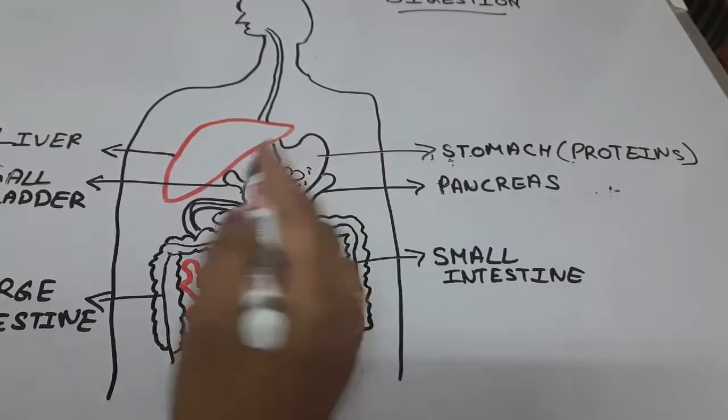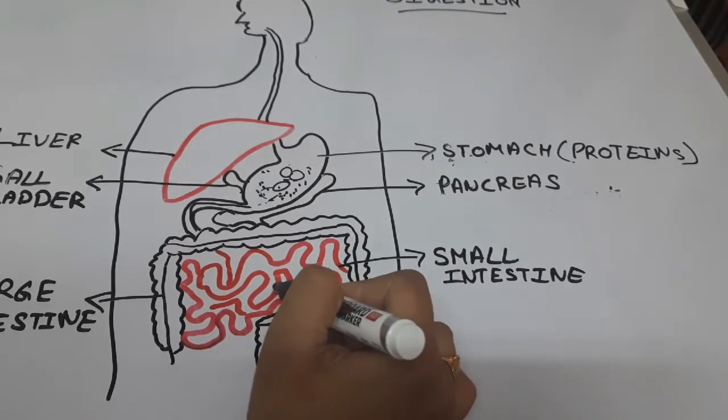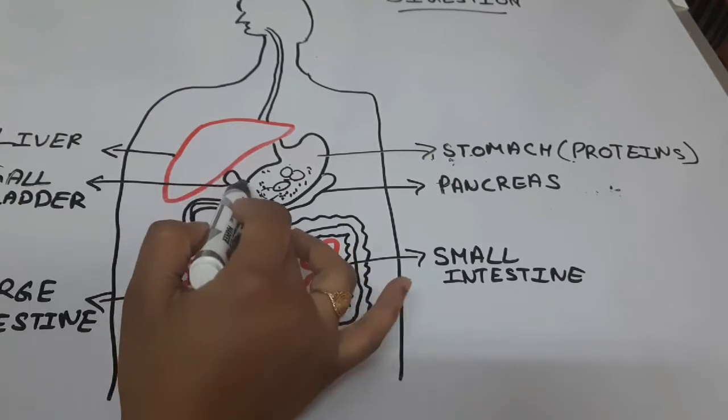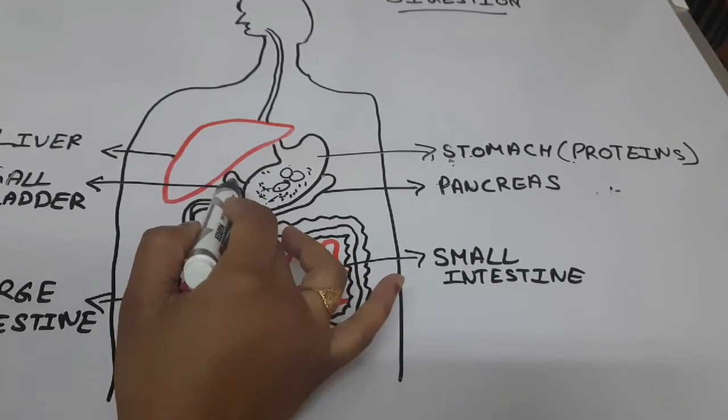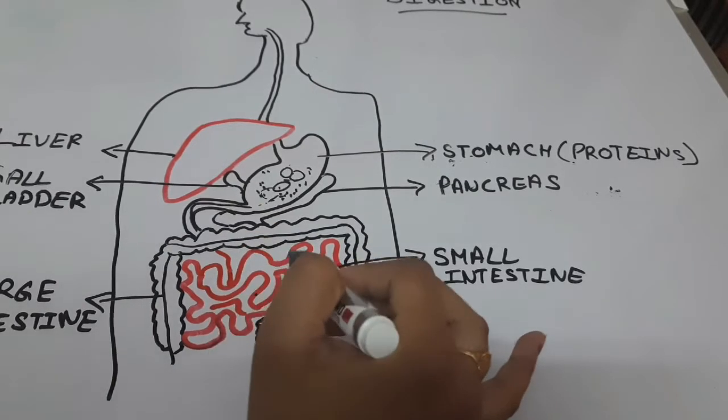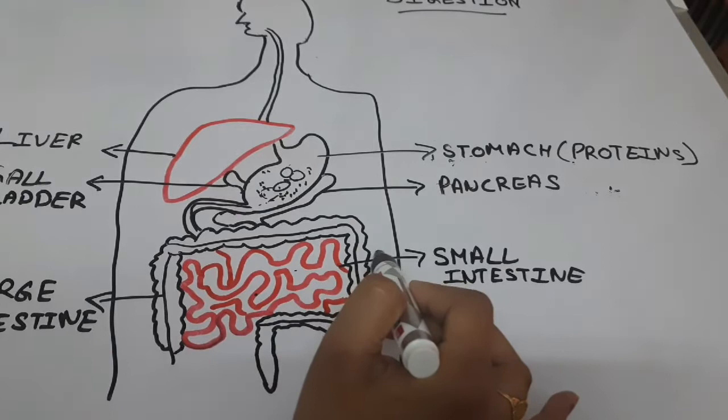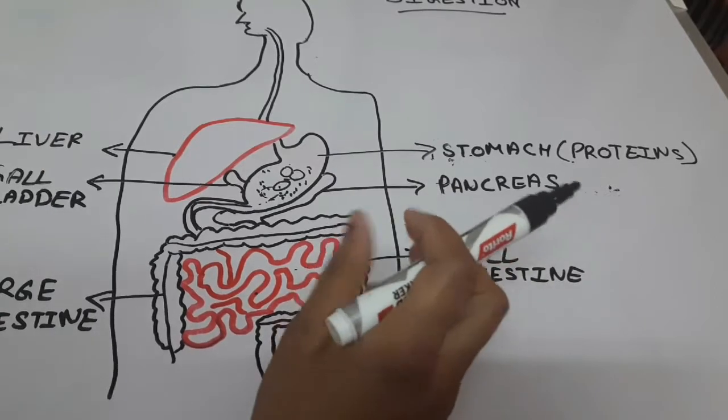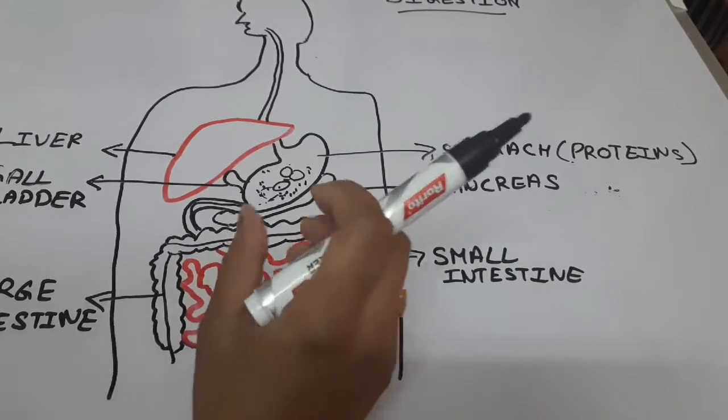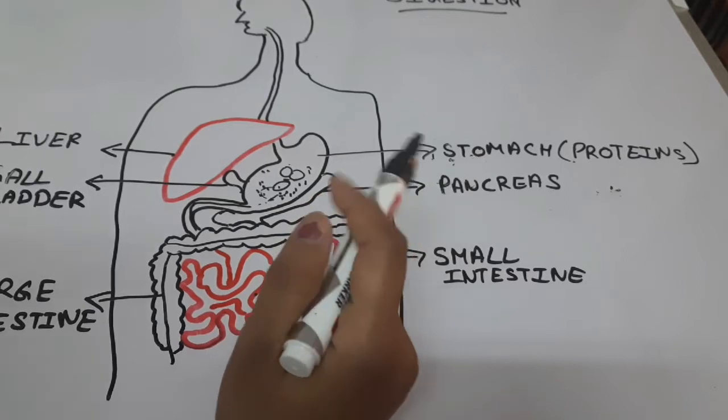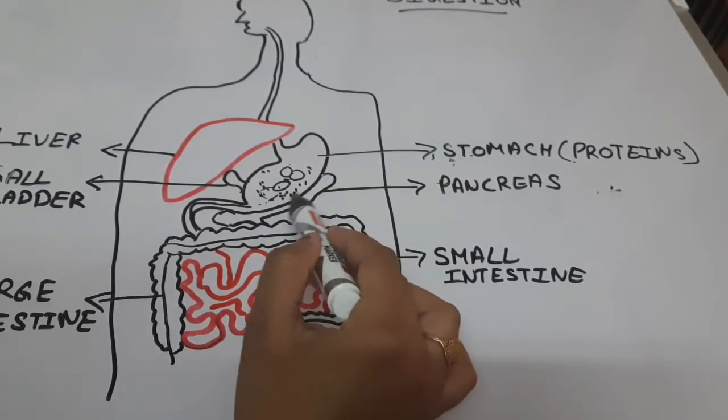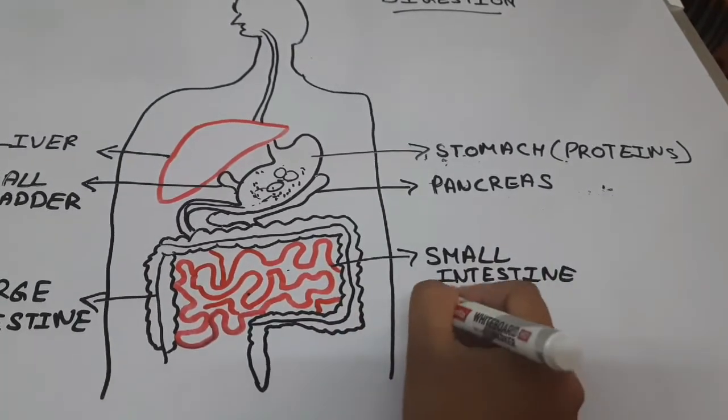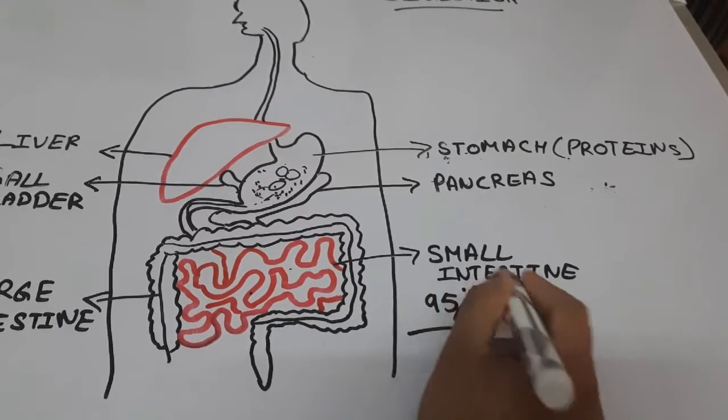We have digestive enzymes and bile provided to the small intestine. The liver produces bile and the gall bladder stores it. This bile goes to the small intestine which helps in the digestion process. And the pancreas also releases digestive enzymes in the small intestine.